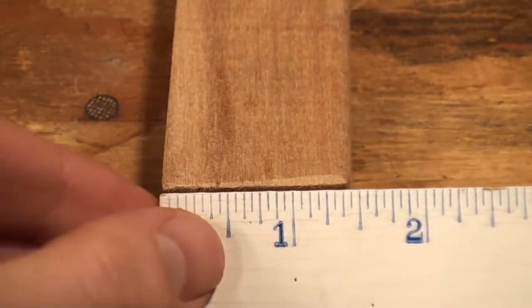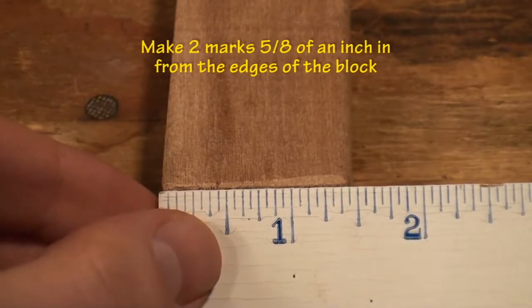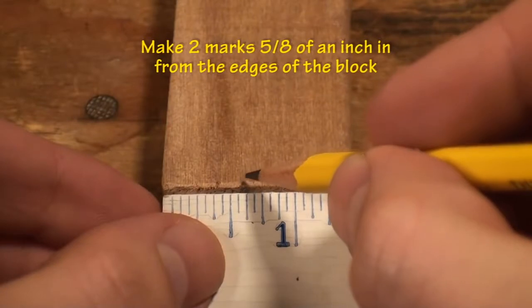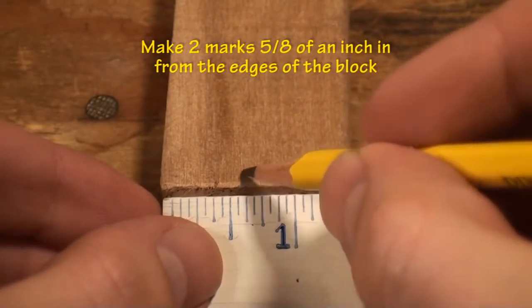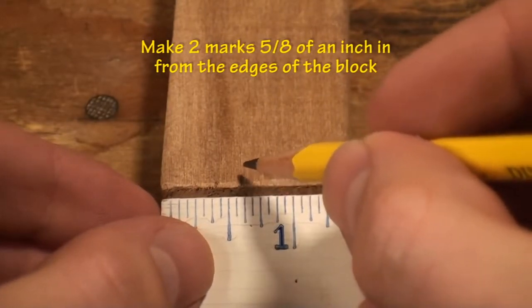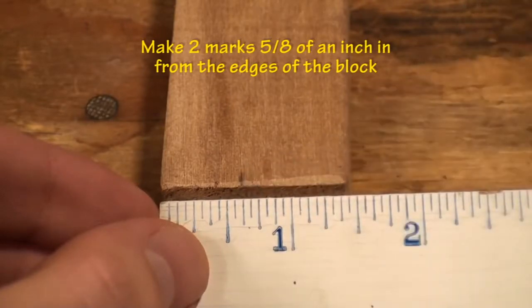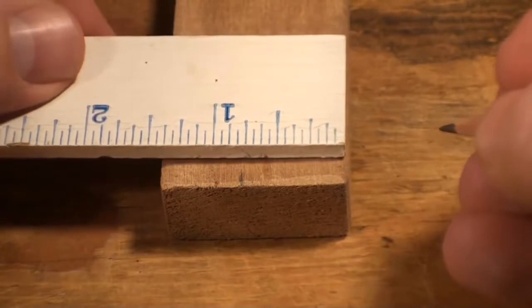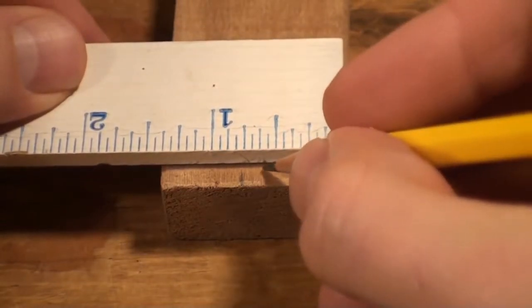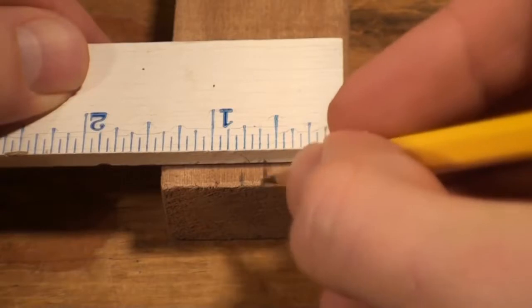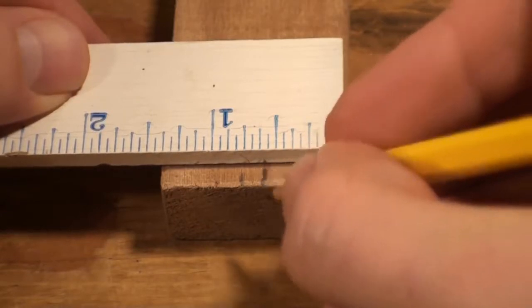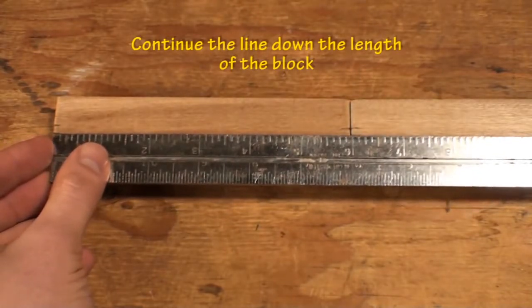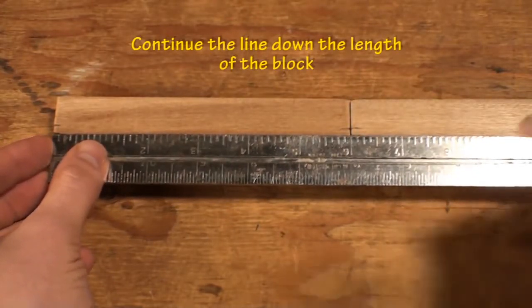Mark two guidelines spaced 5 eighths of an inch from the edges of the blocks. These will help to assure proper spacing when the plastic angles are mounted.